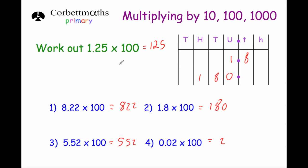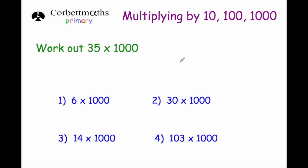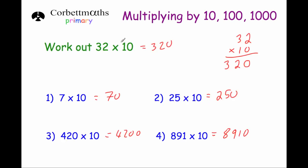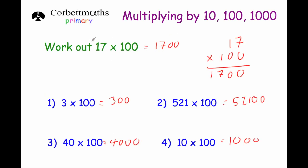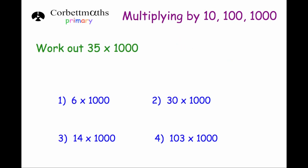So if we multiply decimal numbers by 100, the digits get 100 times larger. The quick and easy way to do that is to move the digits two places to the left. Now we're going to look at how to multiply whole numbers by 1000. When we multiplied whole numbers by 10, we added one zero; by 100, we added two zeros. Multiplying whole numbers by 1000, we can just add three zeros on the end, as long as it's a whole number.